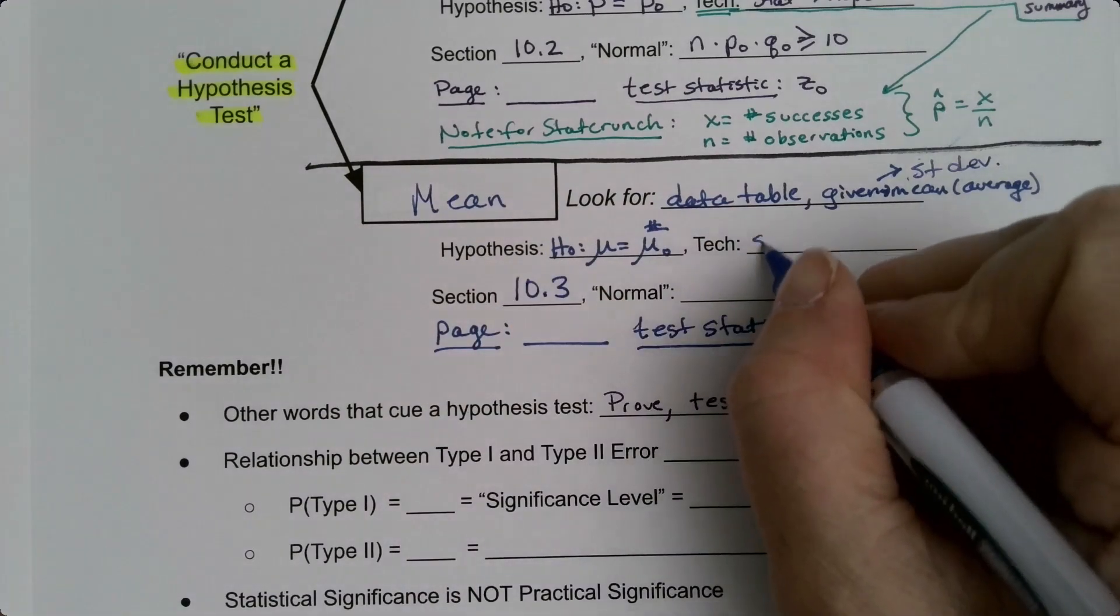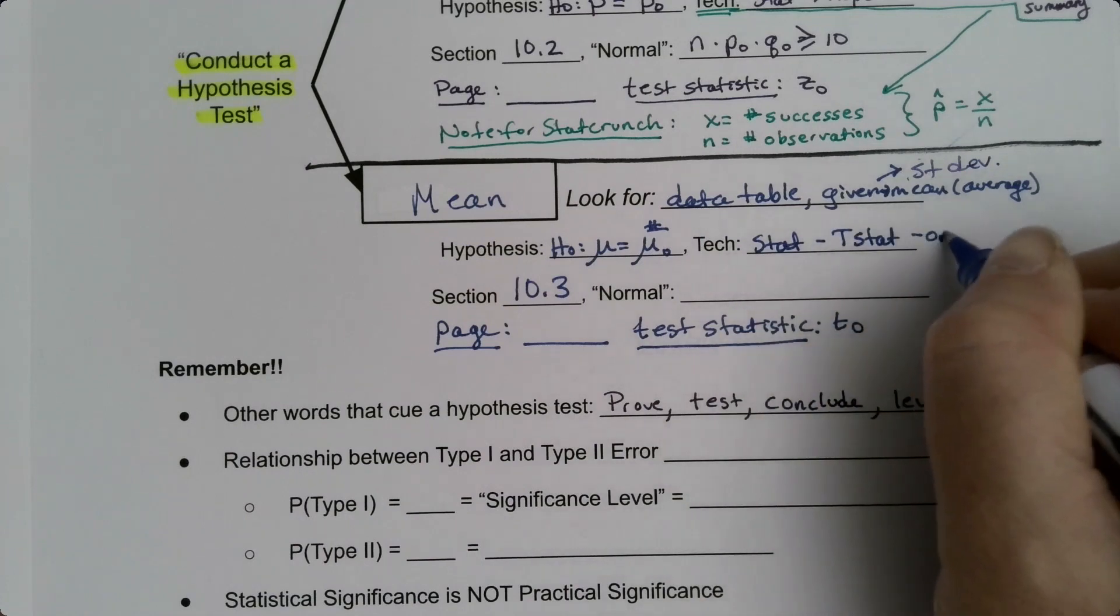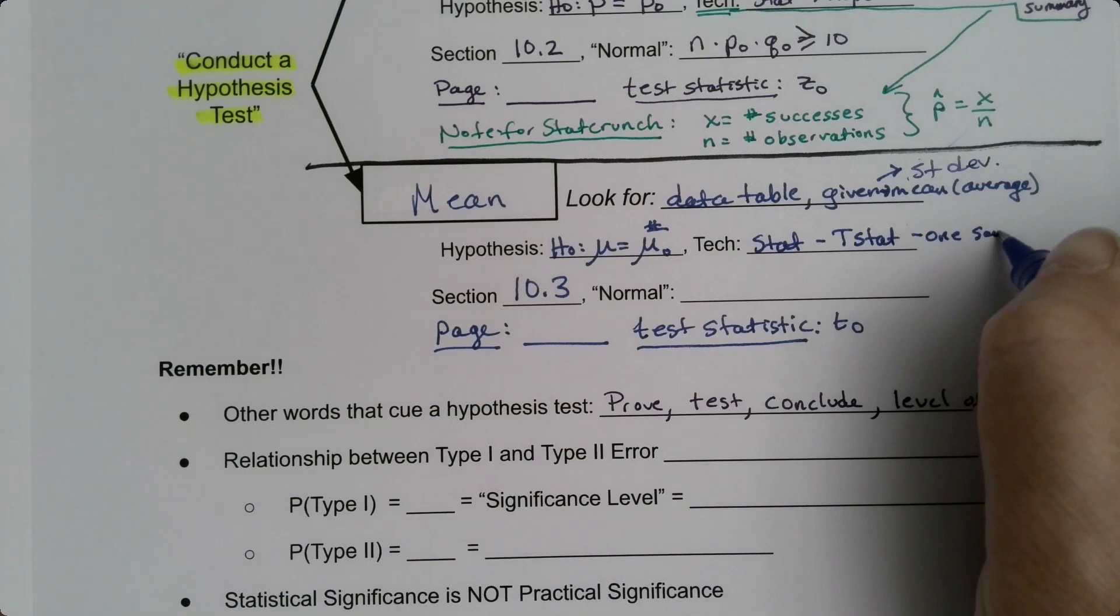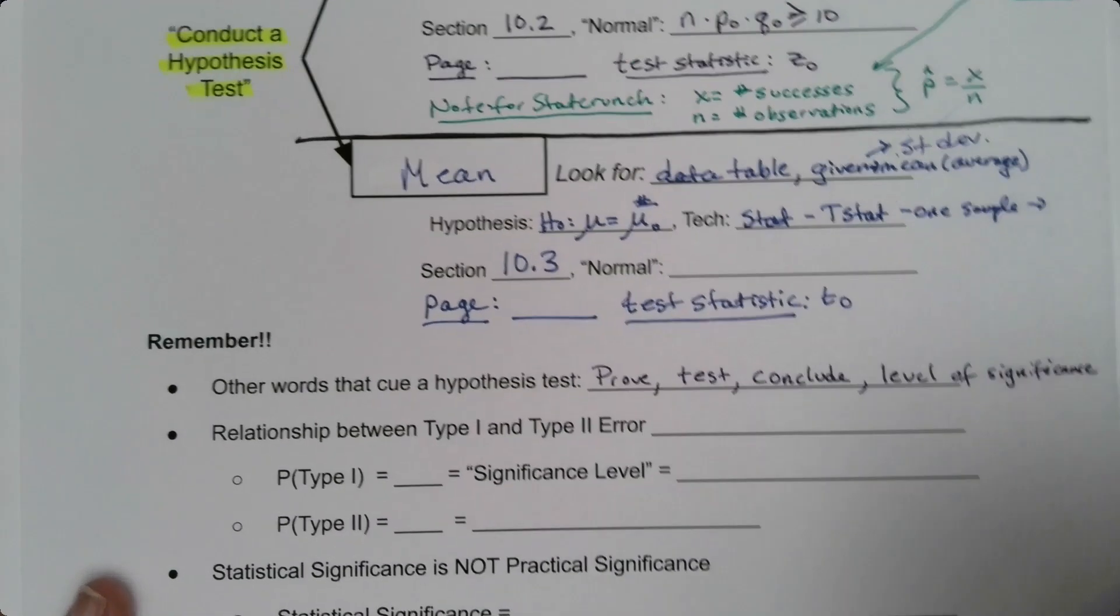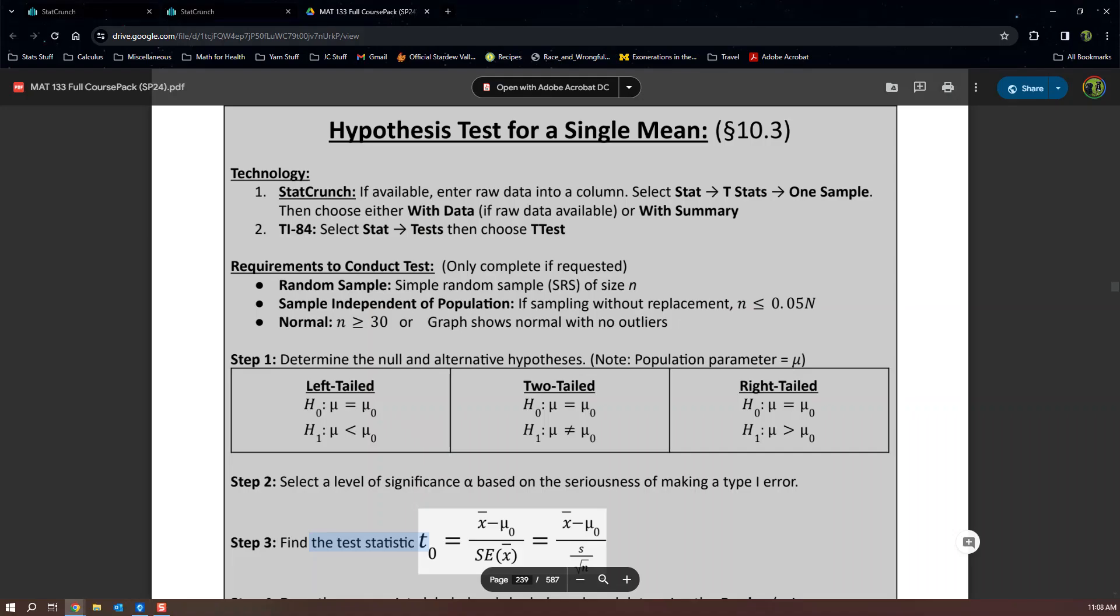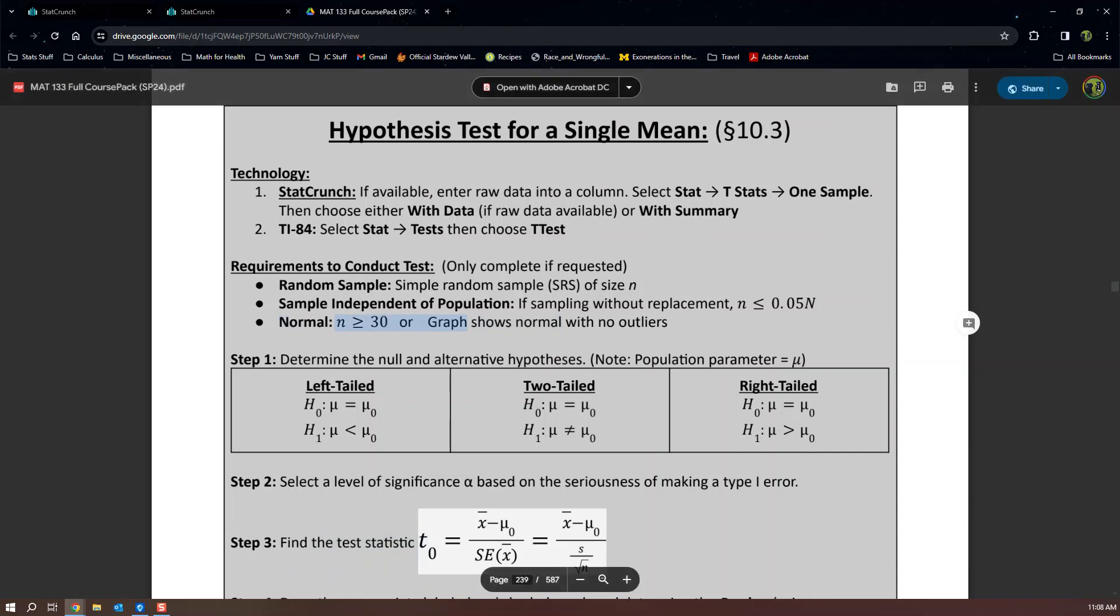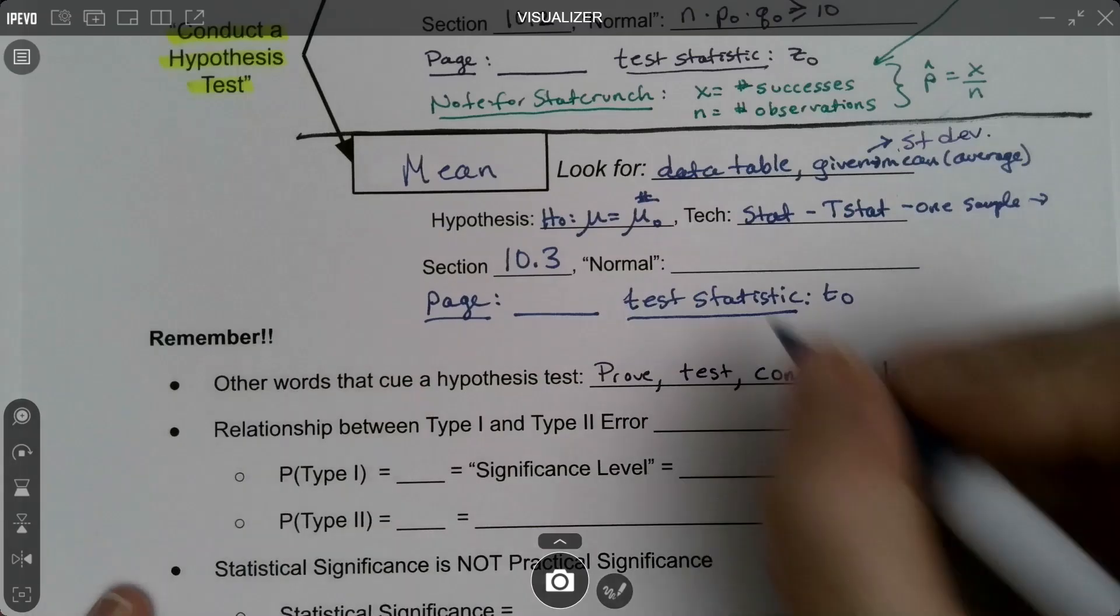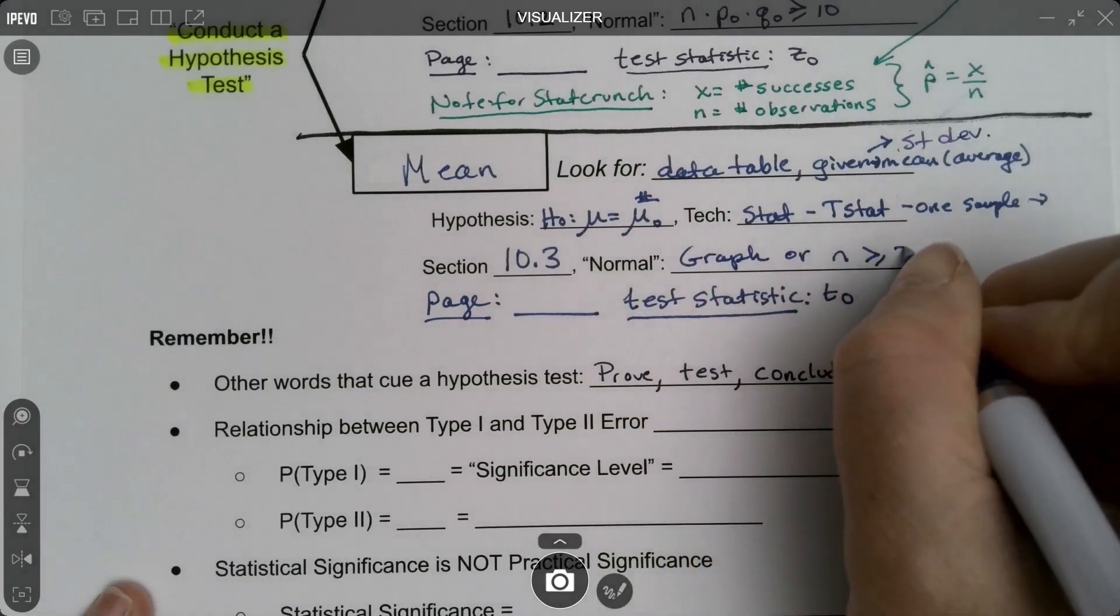And then we want Stat, t-stat, one sample. And then I'm going to make a note about that down below here. And then the normal piece is n greater than 30 or a graph. So you could have a graph or you could have n greater than 30, either one. So graph or n greater than or equal to 30.